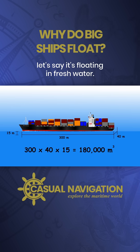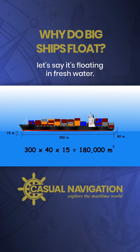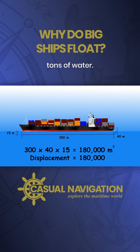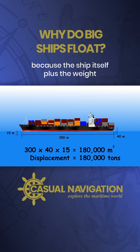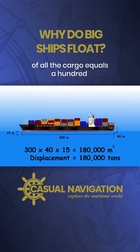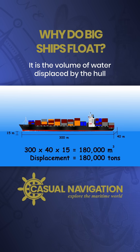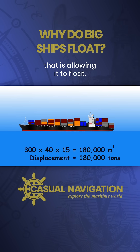As this is just an example, let's say it's floating in fresh water. It's displaced 180,000 tonnes of water. Because of Archimedes, we know that it's floating because the ship itself, plus the weight of all the cargo, equals 180,000 tonnes. It is the volume of water displaced by the hull that is allowing it to float.